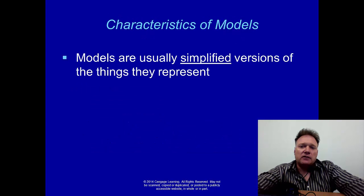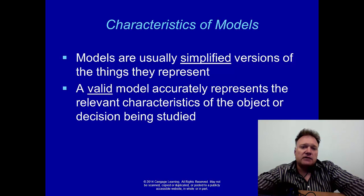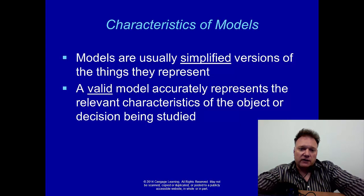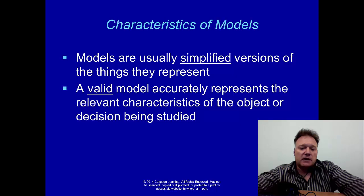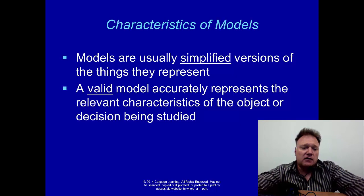Characteristics of models: they're usually simplified versions of the things they represent. We usually aren't able to model everything, but hopefully we capture the relevant characteristics. If we do, that would be considered a valid model. We don't always achieve that immediately, and sometimes it takes a few tries to get a valid model, but that is the goal.